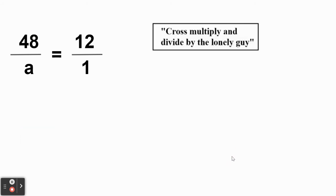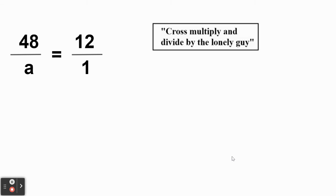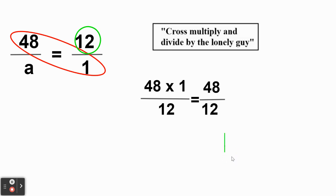But we also have our buddy cross-multiply, divide by the lonely guy. What do we have? There it is. 48 times 1 divided by 12. 48 times 1 divided by 12 is 48. Divided by 12. And we get that a is 4. The same exact way.